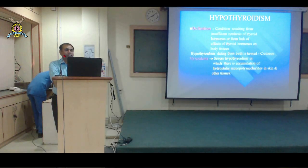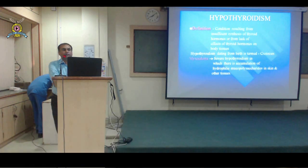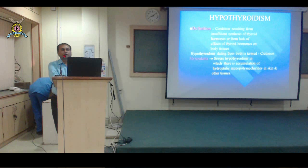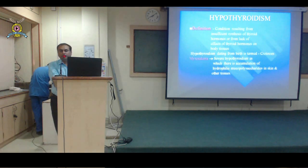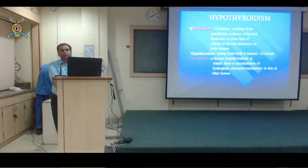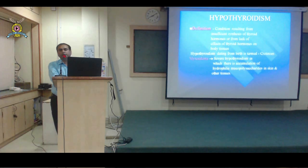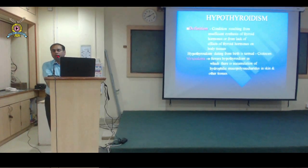The thyroid gland is stimulated by thyroid stimulating hormone (TSH), which is secreted by the anterior pituitary gland. TSH secretion is stimulated by thyrotropin releasing hormone (TRH) secreted by the hypothalamus. So the hypothalamus secretes TRH, which stimulates the anterior pituitary to secrete TSH, which in turn stimulates the thyroid gland. T3 (triiodothyronine) and T4 (thyroxine) are synthesized in the thyroid gland and, with stimulation from TSH, are released into the bloodstream.